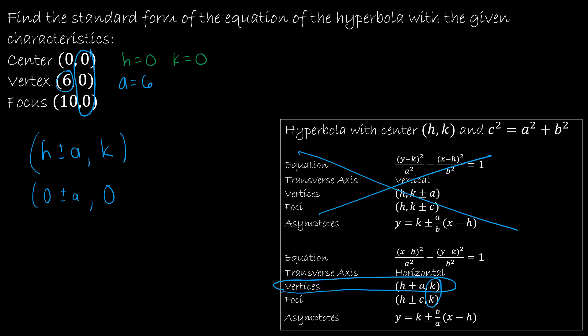What else can I find? Well, I know that if the focus is found by H plus or minus C comma K, and I know that H is 0 and K is 0 and my focus is 10, then what would I have to have C be in order for that to be 10? Well, C would have to be 10.